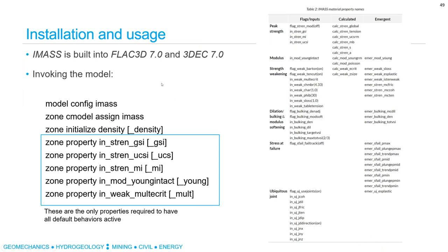In terms of installation and usage, IMAS is built into FLAC3D and 3DX7. To invoke the model, you basically need to mention 'config IMAS' and assign the constitutive model. Apart from density, you only need five initial parameters for IMAS to kick in all the default behaviors: GSI, intact UCS, mi value, intact modulus, and the multiplier for e-crit. The reason we put the e-crit multiplier here is to encourage the user to think about this value when doing the simulation and to account for how important this parameter is. These are the initial parameters you need — then as you make your model more complex or need to add more features, you can start playing with the additional parameters.